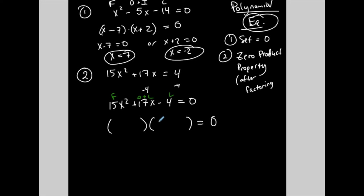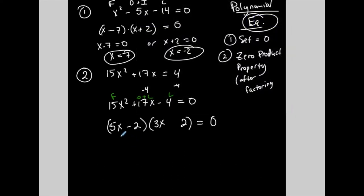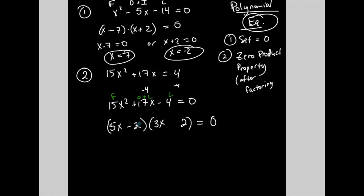The first part of FOIL — what times what is 15x²? I'm going to try 5x and 3x. The last part — what two numbers give me negative 4? Let's try 2 and 2. My outer is 10x and my inner is negative 6x. A 10 and 6 will never give me 17 no matter how I do it, so this is incorrect. I'm going to try different factors of 4. With 4 and 1: my outer gives me 5x and my inner gives me negative 12x. A 5 and 12 could potentially give me 17, but I can't make them both positive because I need the product to be negative, so the signs aren't working.